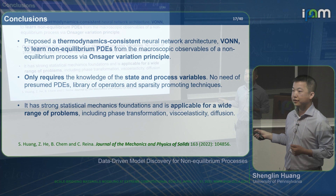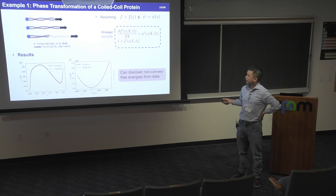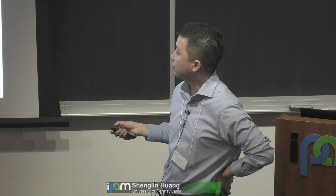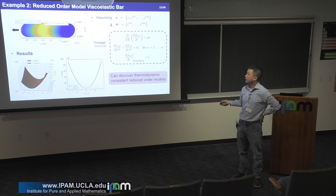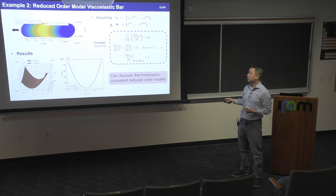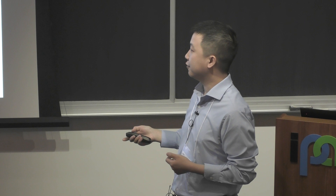Regarding how much data is needed: for all three examples I only used one trajectory — one continuous evolution. For the simpler cases like diffusion, it's maybe 20 discretizations in space and time, perhaps a hundred or a thousand points. The neural network architecture is also very small — just two hidden layers with 25 nodes per layer — because we are learning the potential itself, not the evolution trajectory. Learning the evolution trajectory would require a larger architecture, but these two potentials are relatively simple.